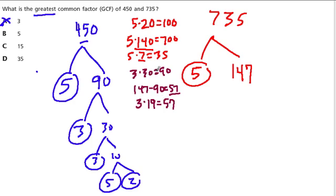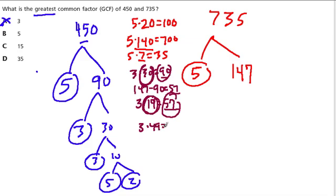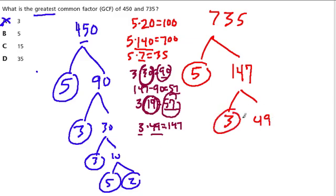3 times 30 gave us 90, and 3 times 19 gave us 57. Together, 90 and 57 is 147. So 3 times the sum of 30 and 19 gives us 147. What's 30 plus 19? That's 49. So 3 times 49 is 147. Let's verify: 3 times 50 is 150, so 3 times 49 is 3 less — that's 147. And 49 is just 7 times 7, two prime numbers.